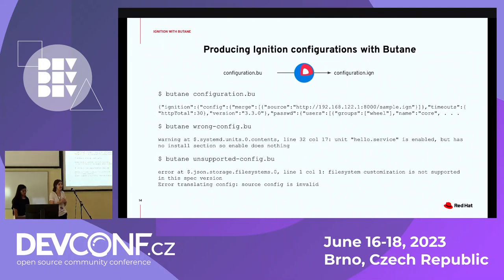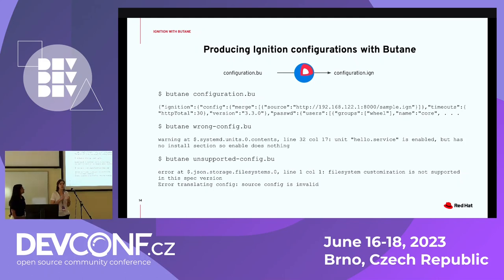Some examples: if everything goes well, running Butane would produce a JSON Ignition configuration file. If something goes wrong — for instance, if you've forgotten to establish an install section in a systemd unit — Butane would tell you there's an error there. And if you're using something not supported at all, Butane would give an error saying the file system configurations are not enabled for the variant you are using.